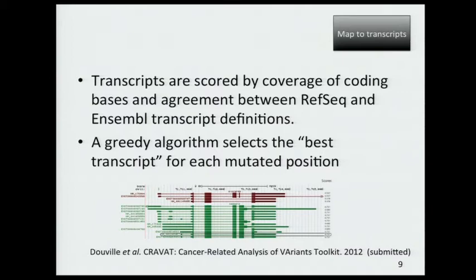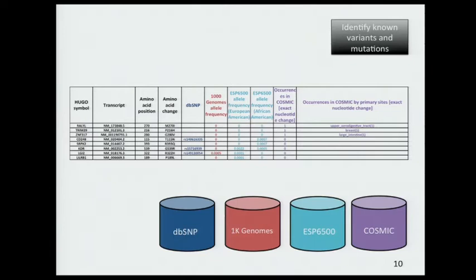In the next step, we identify mutations and variants that are already known, and we provide allele frequencies from 1000 Genomes and ESP6500. We show the number of times a mutation has been seen in COSMIC, and also the primary tumor tissue types in COSMIC in which the mutation has occurred.